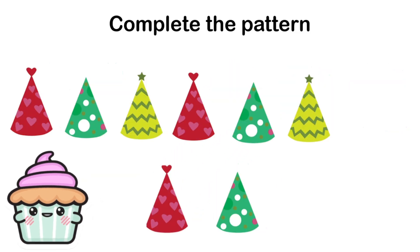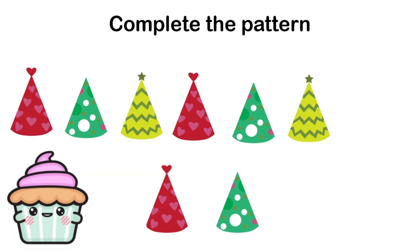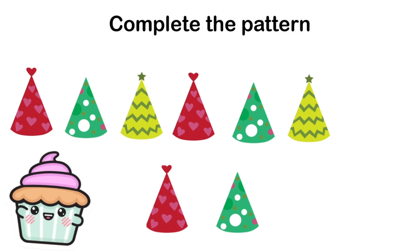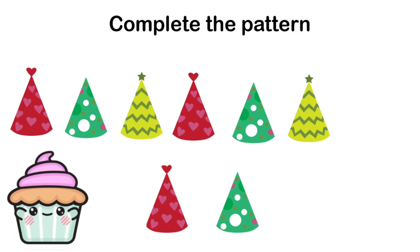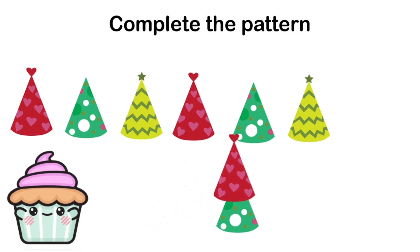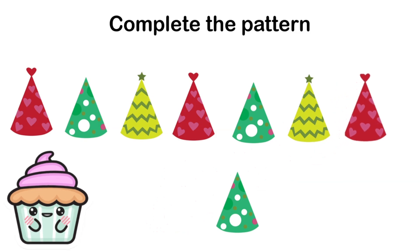Can you help me complete this pattern? I have a birthday hat with hearts on it, then a purple gift, then one with polka dots, then one with zigzags — then hearts, polka dots, zigzags. What comes next? Is it a birthday hat with hearts on it or polka dots? You're right — it's a birthday hat with hearts on it!